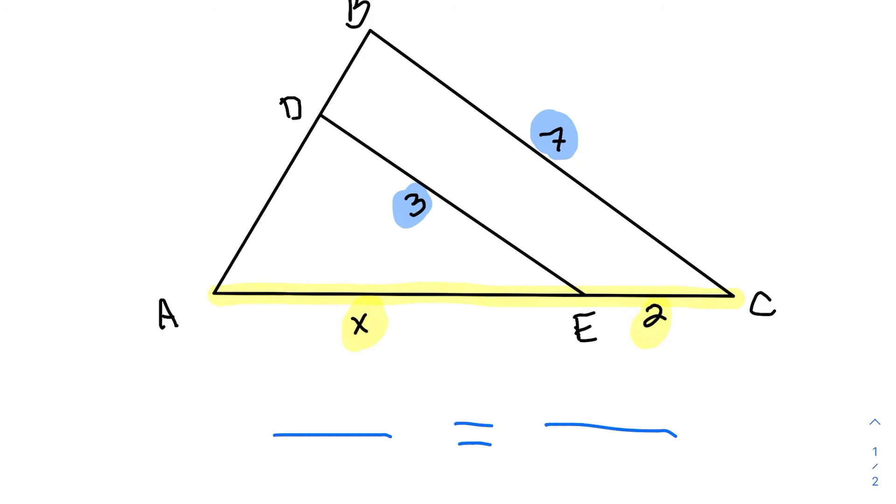So to set up our proportion, we're going to look at the ratio of three to seven. So it's smaller triangle to the larger triangle equals the ratio of X, which is from the smaller triangle ADE, to X plus two, which is the corresponding side for that larger triangle ABC.